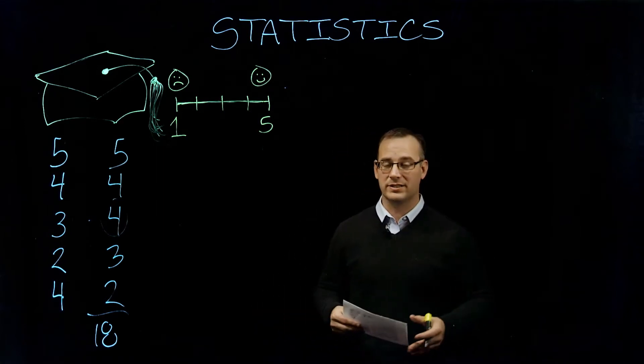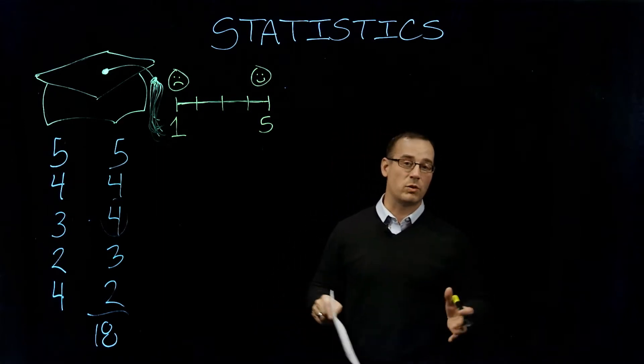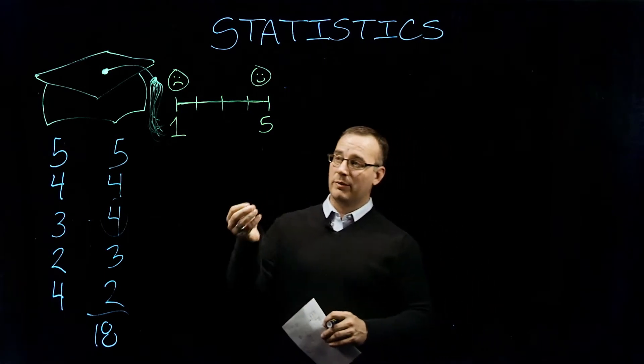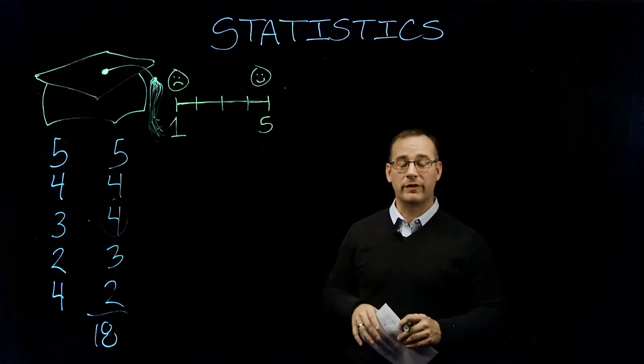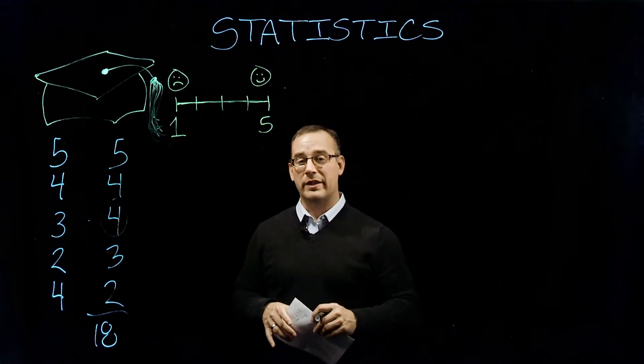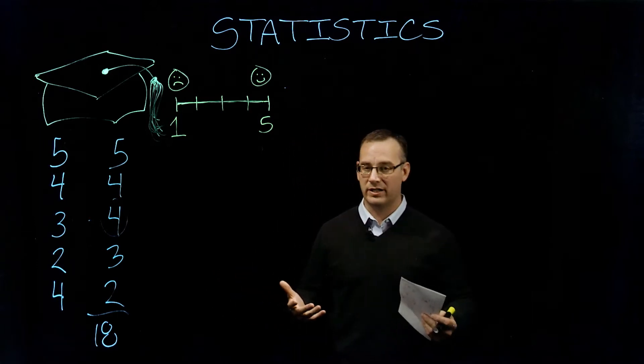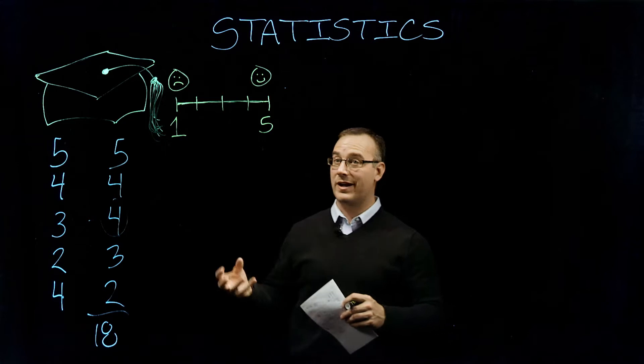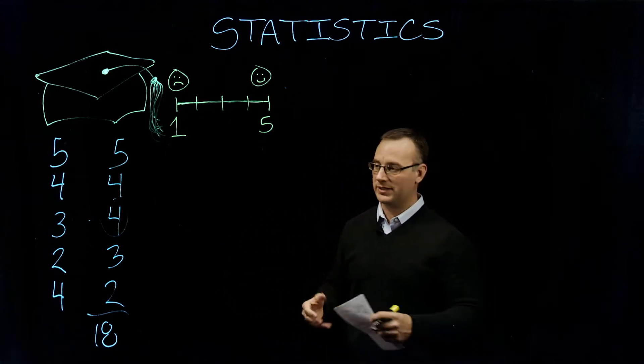In essence, variability in statistics tells us something about the spread of scores. So let's remember the data set that we're working with. Here we have a sample of data from recent graduates from a college or university, and they were asked on a one to five scale their satisfaction with their experience at the university. From one being weren't satisfied at all to five being extremely satisfied.